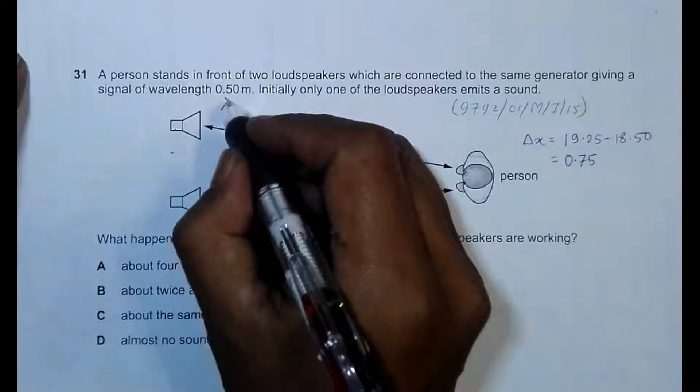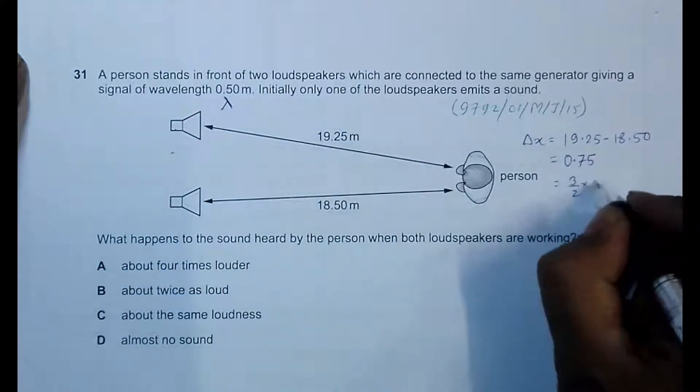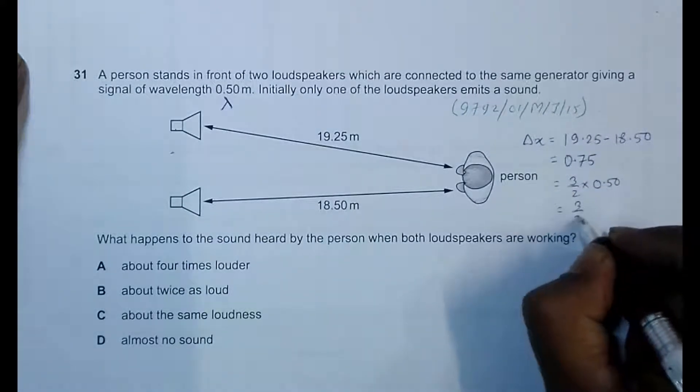We have been given that the wavelength is like this. So it's equal to 3/2 into 0.50, which is equal to 3/2 lambda.